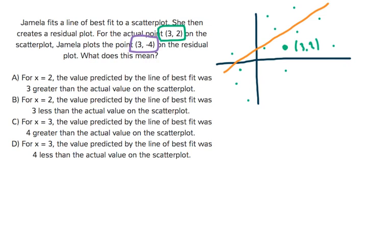What this residual is telling me is that for the x value of 3 that we have here — this point (3, 2) — it tells me that the actual point is 4 below. Since the residual is negative 4, that means this actual point is 4 below my line of best fit. So that's how we got that.